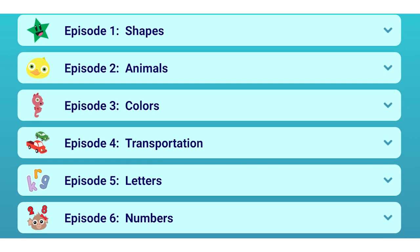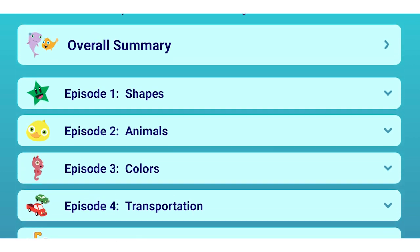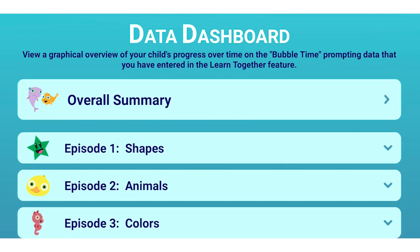These data are designed to help adults track a child's progress and will not be used for any other purpose. The app tracks the amount of needed support — more, same, less, independent — and dates of use. You can review a child's progress as a whole in the overall summary, or specifically by episode or by chapter.